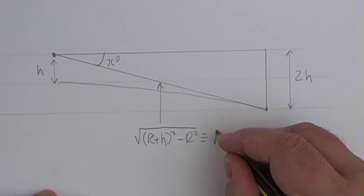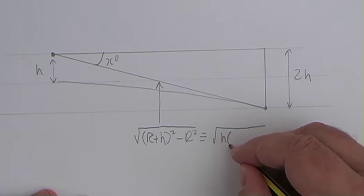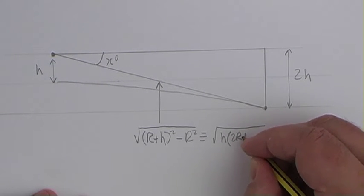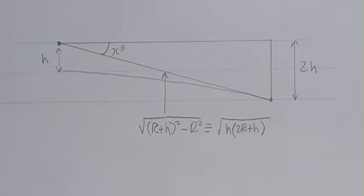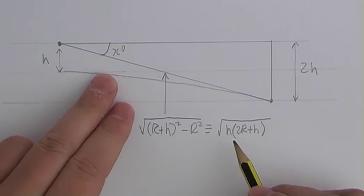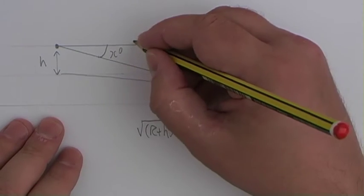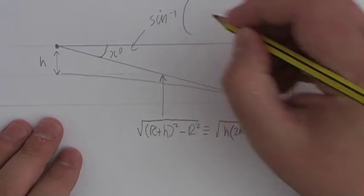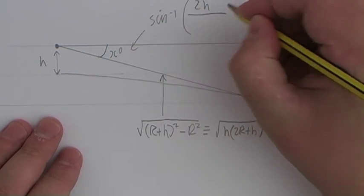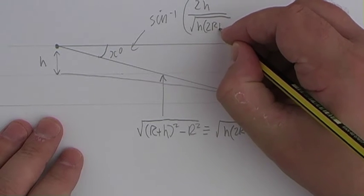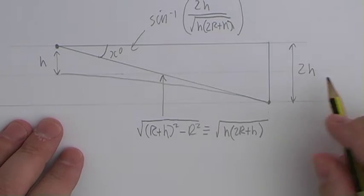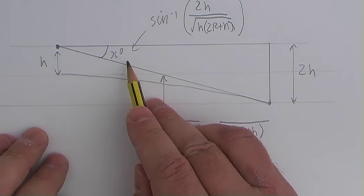I'm going to rewrite this — these are identical. I'll be rushing through quite a bit of maths because I don't want to spend a huge amount of time explaining it, but I'll show you where it comes from so you can check it yourself. The proper formula for this angle of depression would be the inverse sine of this distance divided by the square root of h(2r + h). So it's the inverse sine of that distance over that distance.